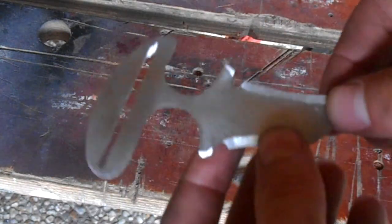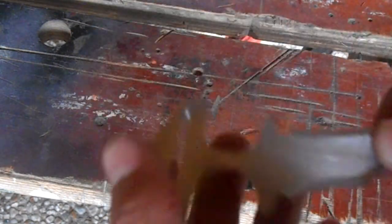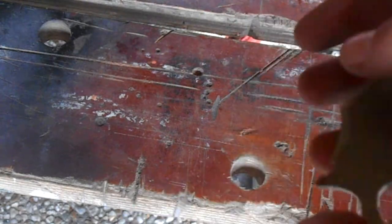To give it a little bit of a darker color, I'm just going to put it in a batch of vinegar and let it sit overnight. That will etch the blade a little and make it look a little bit darker than normal.